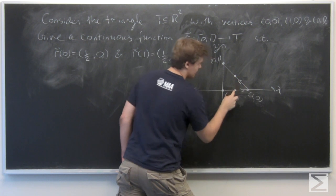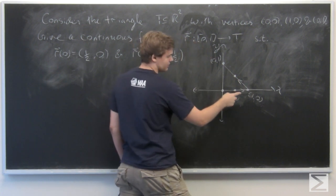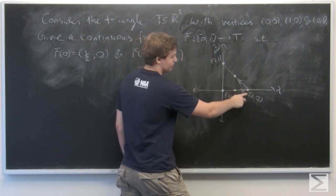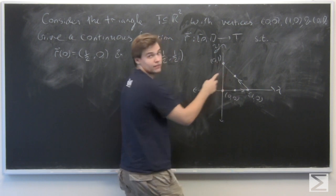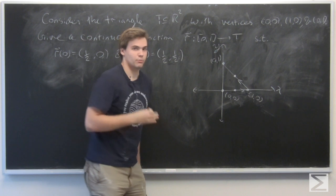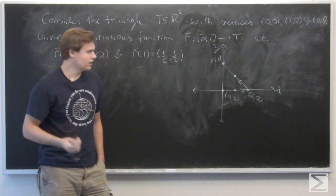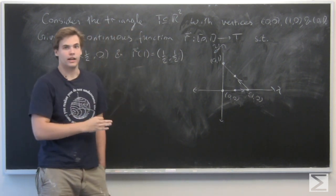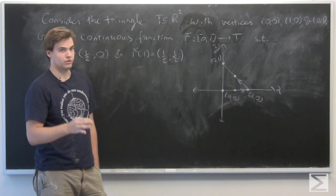So we want to go from (1/2, 0) to (1,0), and then from (1,0) to (1/2, 1/2). Recall from earlier sections how to parameterize a line segment in Rⁿ. We need a point on the line and a vector parallel to the direction of our line.